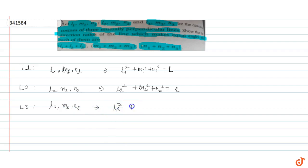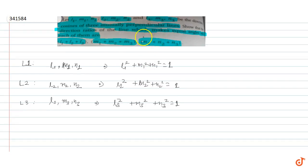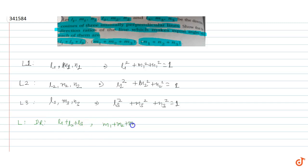The direction cosine ka square ka sum is equal to one. Now let's look at the basic property. We need to prove that the direction ratios of the line which makes equal angle with each of them. The given direction ratios are: L1 plus L2 plus L3, M1 plus M2 plus M3, and for z it is N1 plus N2 plus N3.